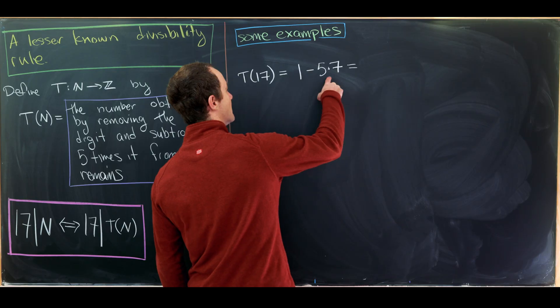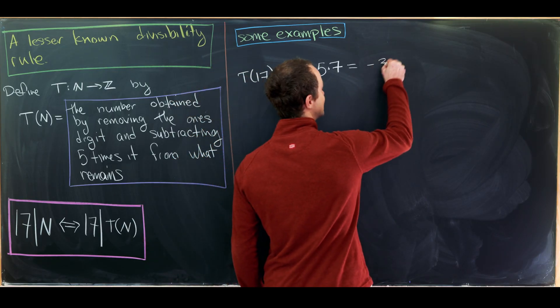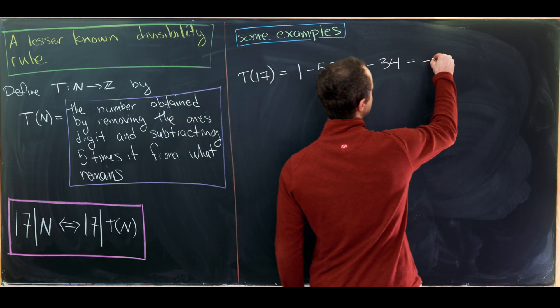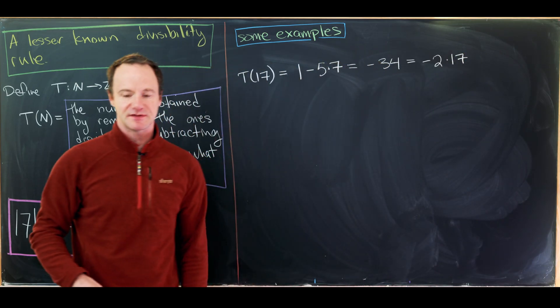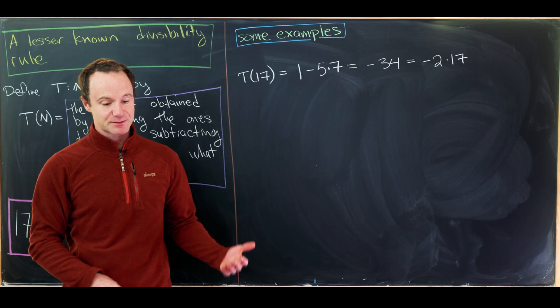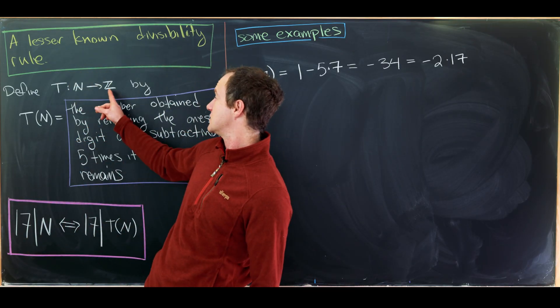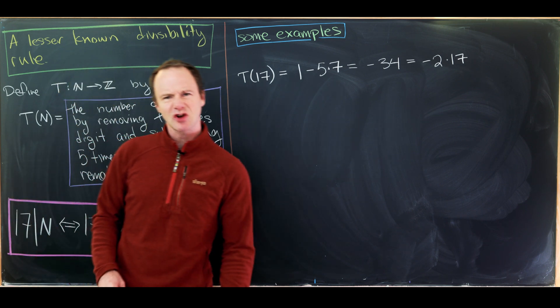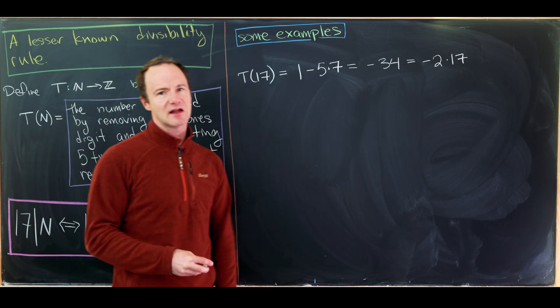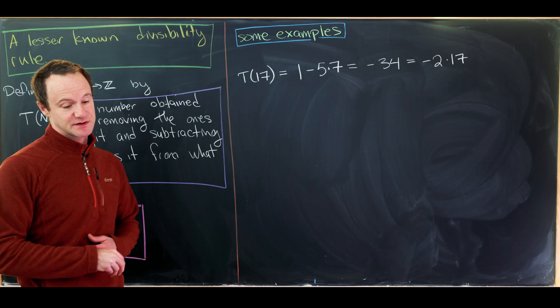So that'll give us 1 minus 35, which is negative 34, which is very clearly negative 2 times 17. So that's a multiple of 17. And now it's pretty clear why we need to end up at the integers here. And in fact, we could start at the integers if we wanted to. I'll let you guys look at some of those examples if you'd like to.